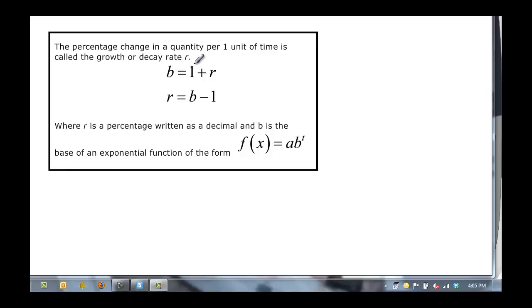The base should be 1 plus r. If we solve for r, we subtract 1, so the rate equals the base minus 1. Where r, what we're looking for, is a percentage written as a decimal, and b is the base of the exponential function in the form f(x) = ab^t, since we're talking about time.